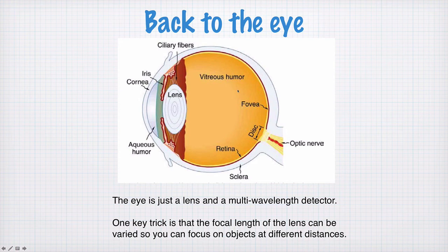Let's go back to the eye now and see how we're doing in understanding all its bits and pieces. We've talked about the multi-wavelength receptors at the back here, the cones and the rods that send signals through the optic nerve to the brain.